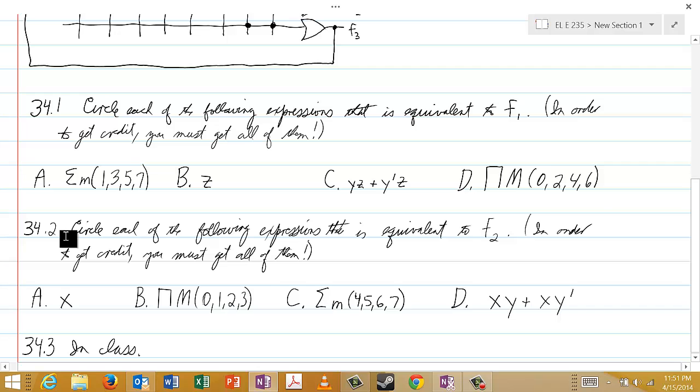For 34.2, you're supposed to circle each of the following expressions that is equivalent to F2. And again, in order to get credit, you must get all of them.